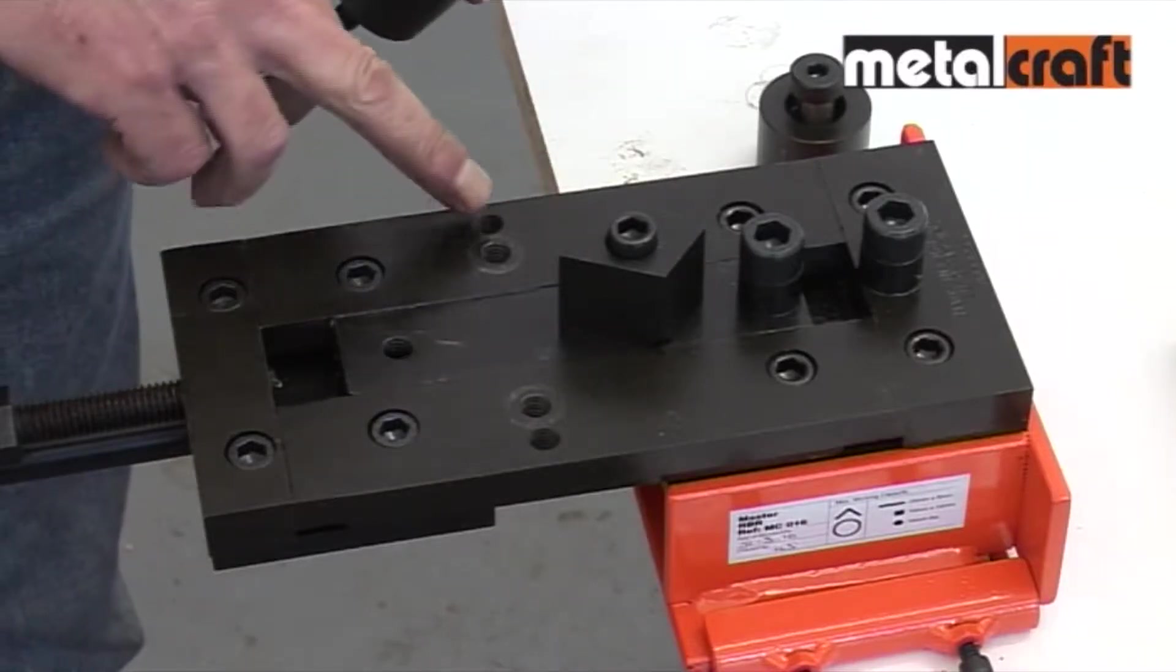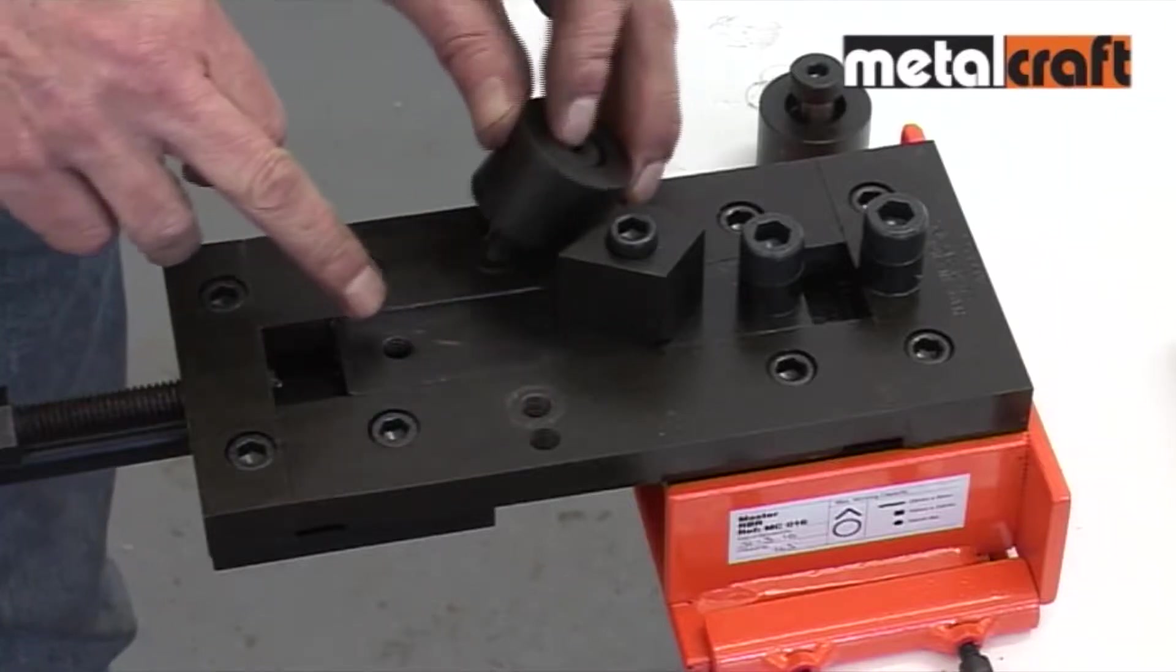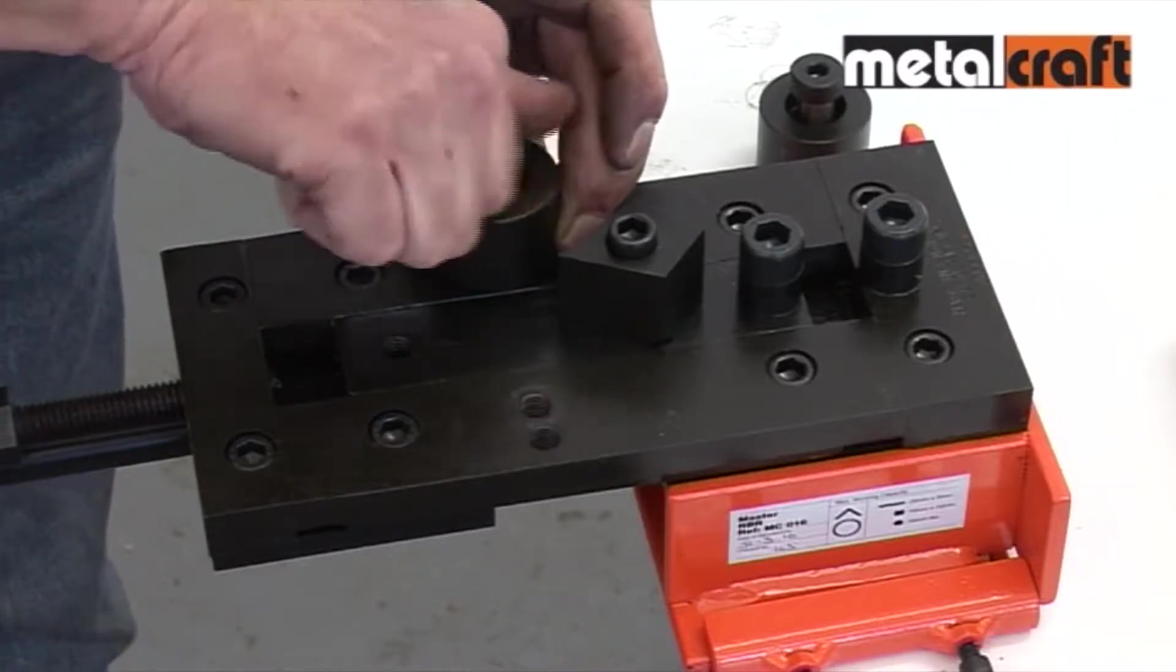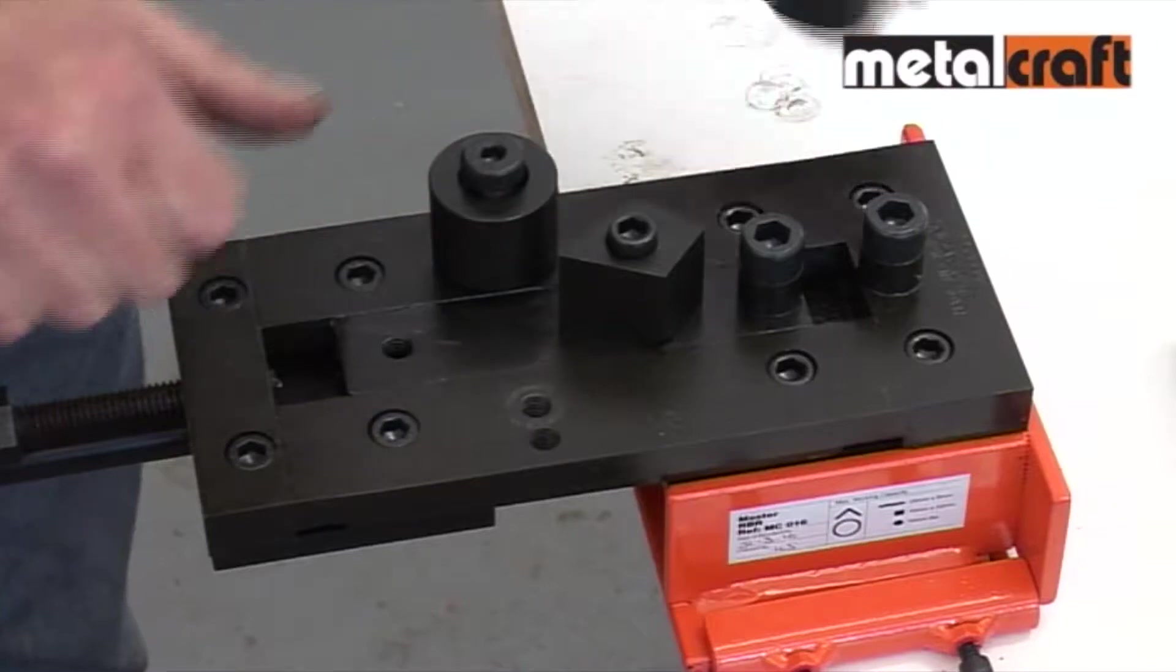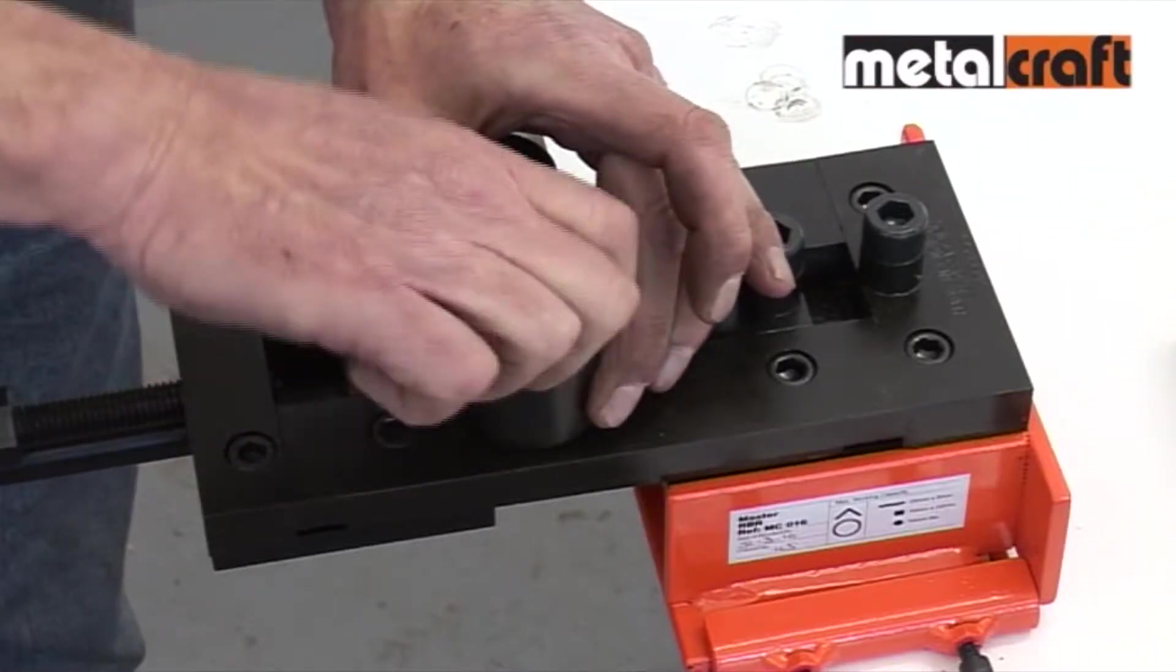Then the side rollers are fitted into the holes indicated on the tool. Finally, before doing any bending, make sure all three are screwed down tightly.